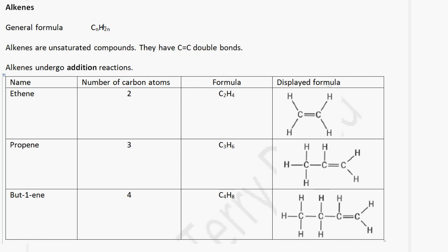Now let's look at the next homologous series called alkenes. The general formula for an alkene is CnH2n. Alkenes are unsaturated compounds — they have carbon-to-carbon double bonds, and alkenes undergo addition reactions. When we compare an alkene to an alkane, we notice that it is unsaturated, has carbon-to-carbon double bonds, and undergoes addition reactions, which is different to an alkane.